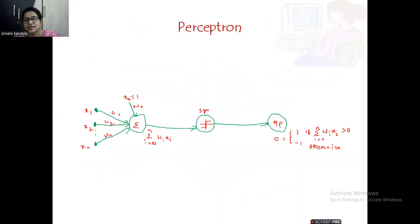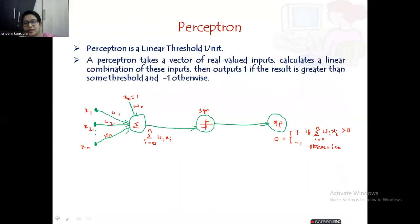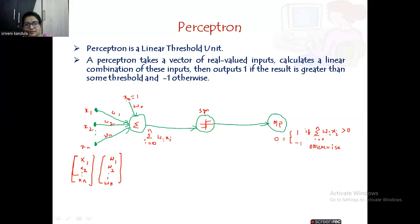Now let us look at an example of a neural network — that is the perceptron. This is the basic unit of the neural network, also called a linear threshold unit. As you see in the diagram, a perceptron takes a vector of real-valued inputs — x1, x2, xn, and so on. In matrix form, we represent this as a vector x1 to xn. This is multiplied with the weight vector w1, w2, and so on up to wn. We also take one extra input, x0, whose value is always 1, with some initial weight — we call this the bias value.